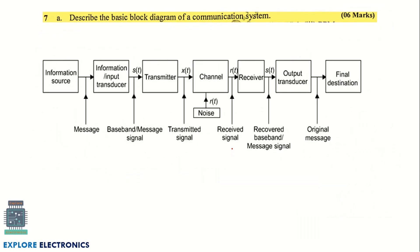The next question asks you to describe the block diagram of a communication system. This is a very important question asked in both the communication subject and basic electronics. The modern communication system goes from information source through a transducer, transmitter (antenna), channel, receiver, and transducer to the final destination. Noise is added in the channel — note that it must be shown at the channel, not below the diagram. This carries six marks.